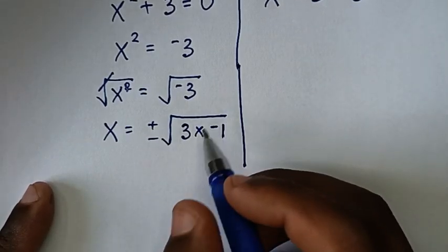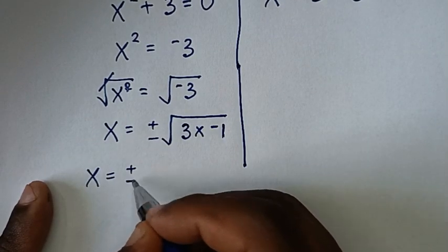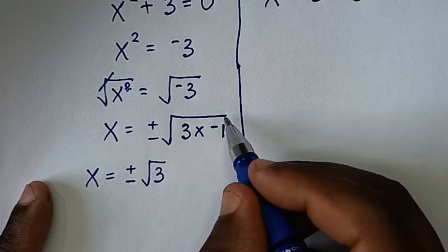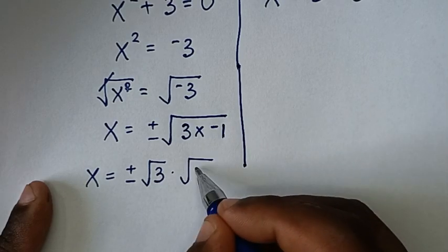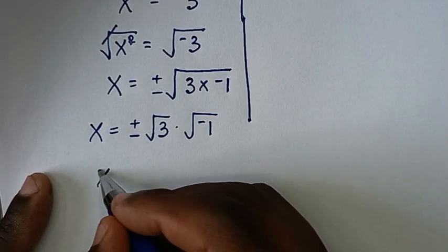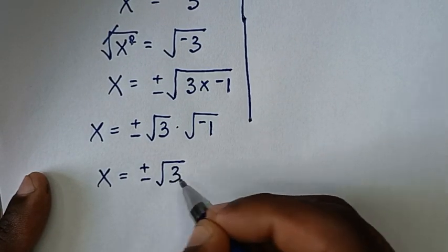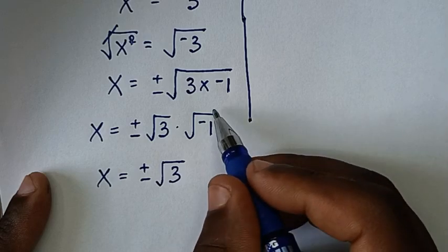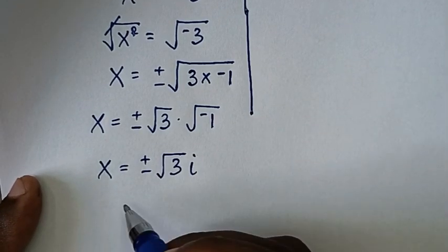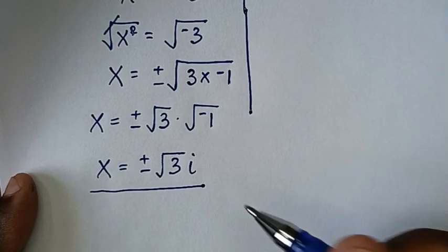We separate this so x = ±√3 × √(−1), and since √(−1) is i, we get x = ±√3 · i. So here we have two complex solutions.